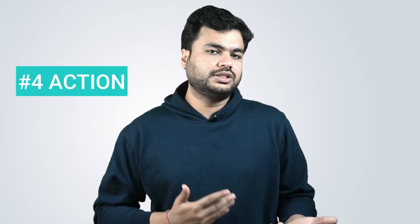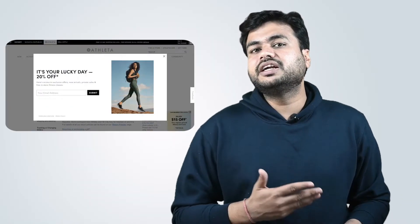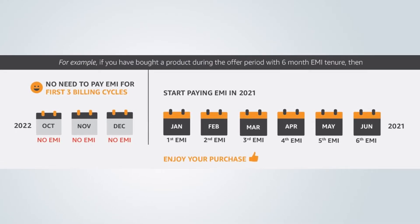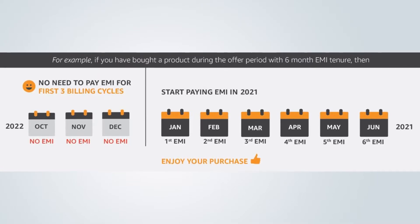The last stage of the funnel is the Action stage, where customers actually go ahead and make the purchase. This is the stage where your business has to make the audience take immediate action. For example, if you own an e-commerce website, you want visitors to purchase your product by clicking the buy button, which can be achieved by offering limited-time offers or discounts. Amazon also does this all the time — encouraging purchases through EMI options, enabling customers to buy gadgets or accessories even when running on a tight budget.